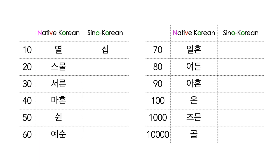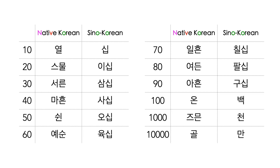100, 1000, and 10,000 in native Korean are rarely used nowadays. In Sino-Korean: 10 is 십, 20 is 이십 (literally 2, 10), 30 is 삼십, 40 is 사십, 50 is 오십, 60 is 육십, 70 is 칠십, 80 is 팔십, 90 is 구십, 100 is 백, 1000 is 천, and 10,000 is 만.